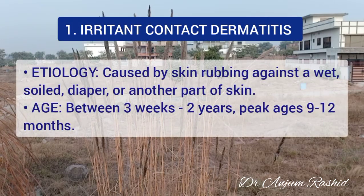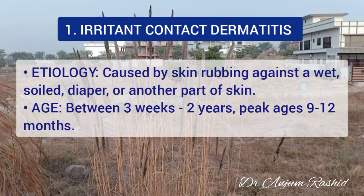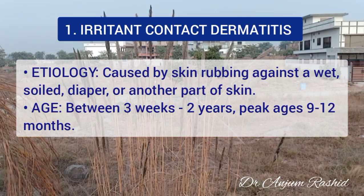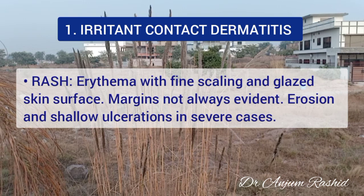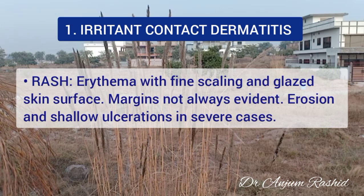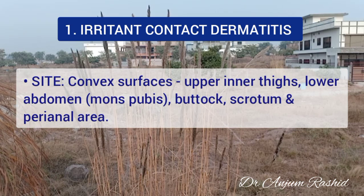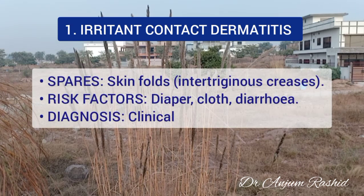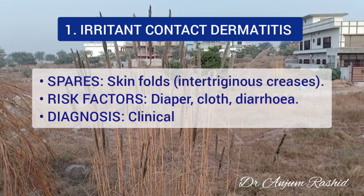The first differential is the most common and important: irritant contact dermatitis. It is caused by skin rubbing against a wet soiled diaper or another part of the skin. Usual age is between 3 weeks to 2 years, with peak age at 9 to 12 months. Rash consists of erythema with fine scaling and glazed skin surface; margins are not always evident. There is erosion and shallow ulceration in severe cases. Sites are the convex surfaces — upper inner thigh, lower abdomen, buttocks, scrotum, and perianal area — where skin folds. Risk factors include the diaper, cloth, or diarrhoea, and it is basically a clinical diagnosis.